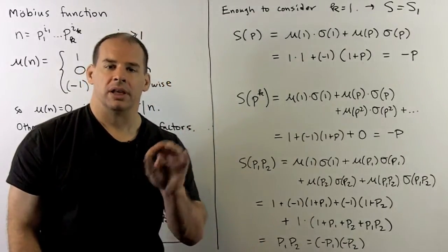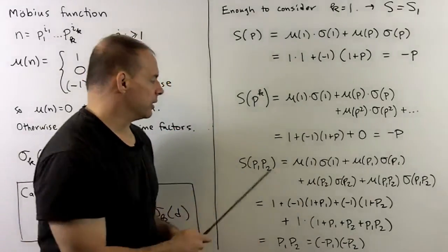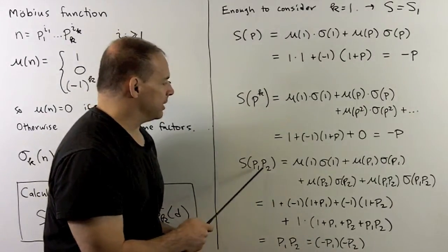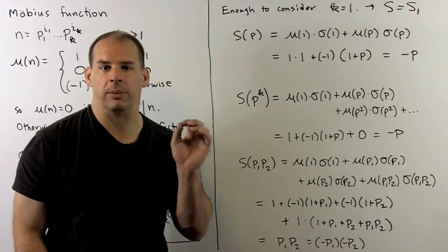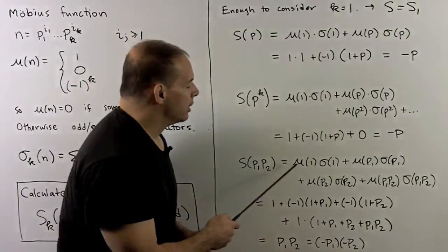One more. Let's try a product of two primes. So here I have S of p1 p2. Same idea. The divisors are 1, p1, p2, and p1 p2.